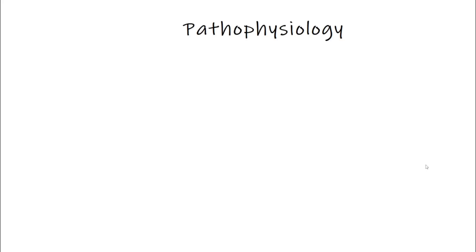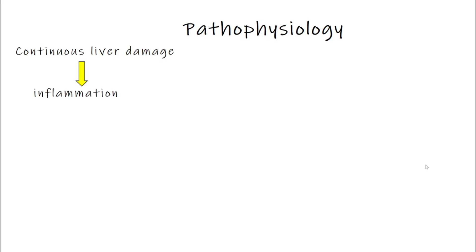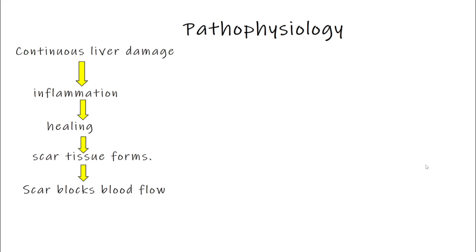Let's look at how liver cirrhosis actually develops — the pathophysiology. It all starts with continuous damage to the liver, maybe from alcohol, infections, or fat buildup. That damage causes inflammation, and the liver tries to heal itself. But with repeated injury, this healing creates scar tissue, and over time more and more of it builds up. This scar tissue blocks blood flow inside the liver.